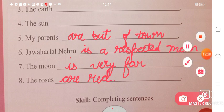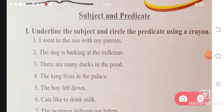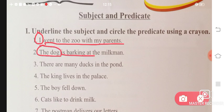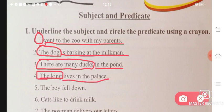Now again you have to identify the subject and the predicate. 'I went to the zoo with my parents.' I is your subject. 'Went to the zoo with my parents' is your predicate. 'The dog is barking at the milkman.' The dog is your subject. 'Is barking at the milkman' is your predicate. 'There are many ducks in the pond.' 'There are many ducks' will be your subject. 'In the pond' is your predicate. 'The king lives in the palace.' The king is your subject. 'Lives in the palace' will be your predicate.